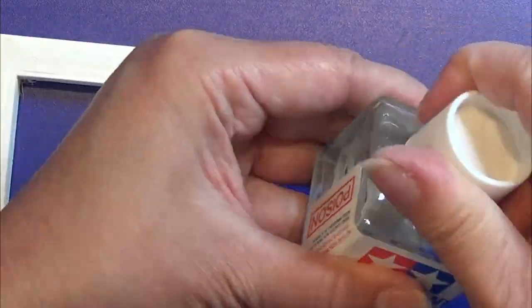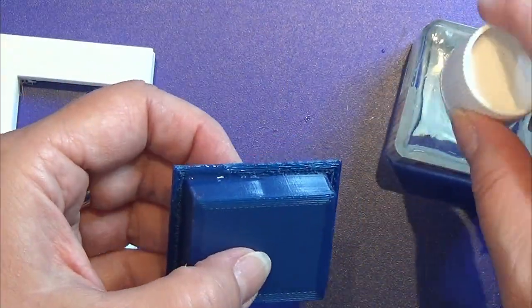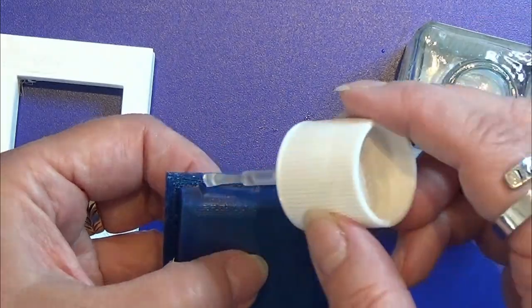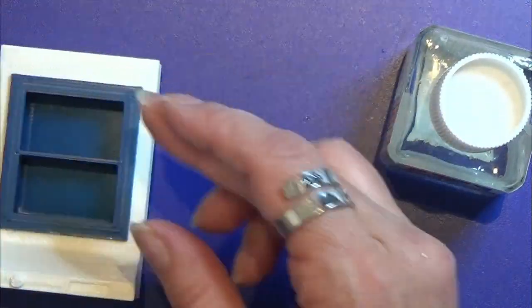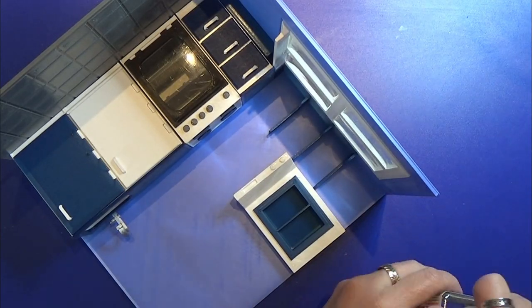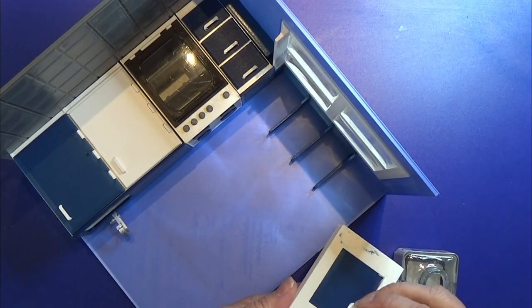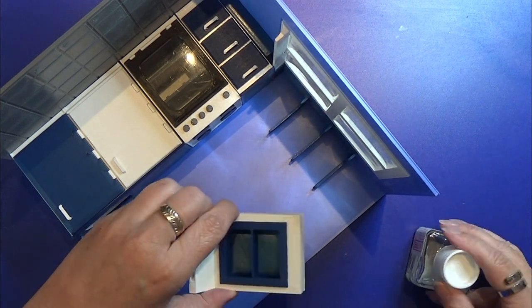I printed the extractor hood, and I have that right here. It's two parts where you just glue this little shelf unit into the extractor hood itself. And I'm going to glue mine onto the wall so it's stuck and I know where it is.